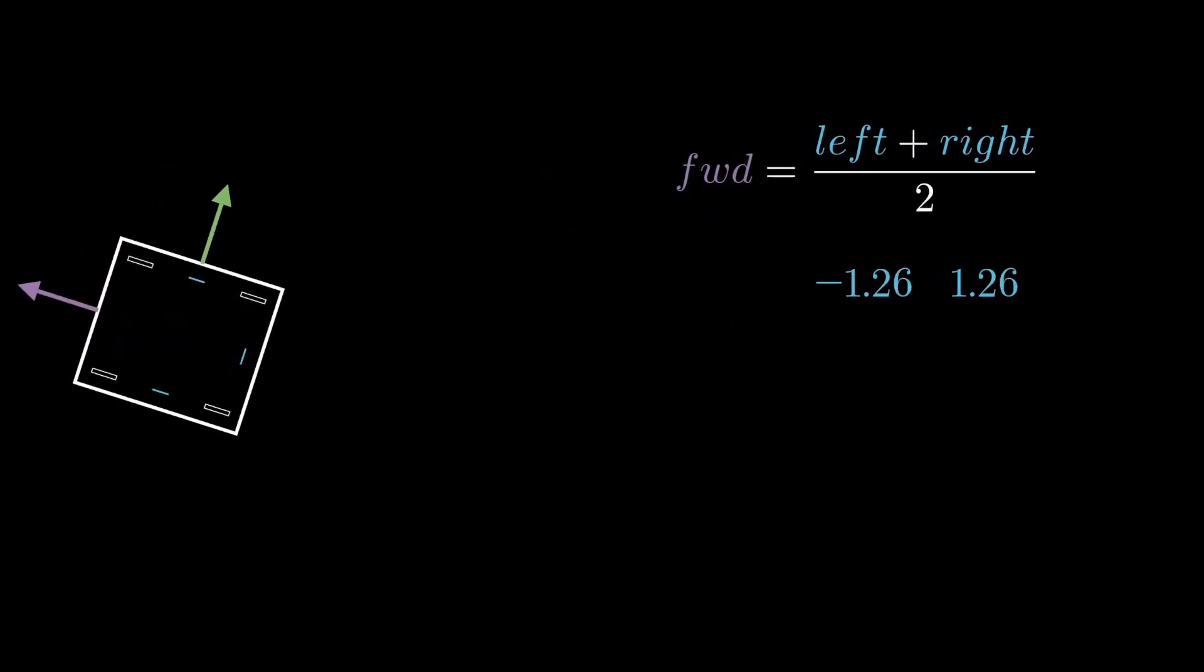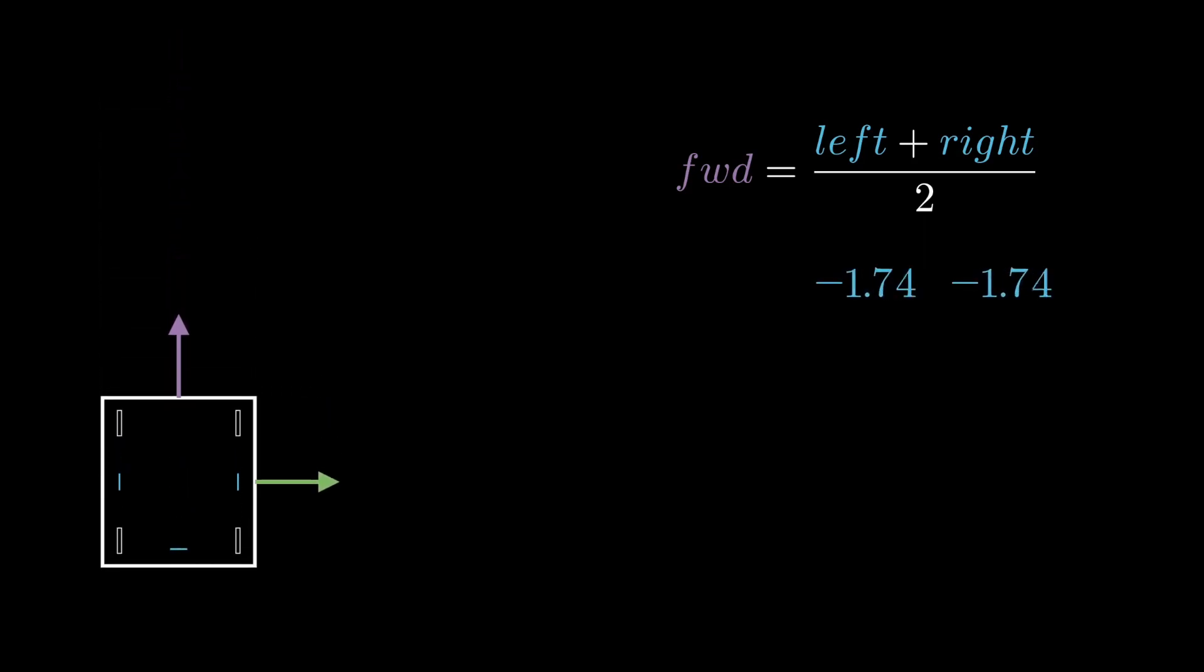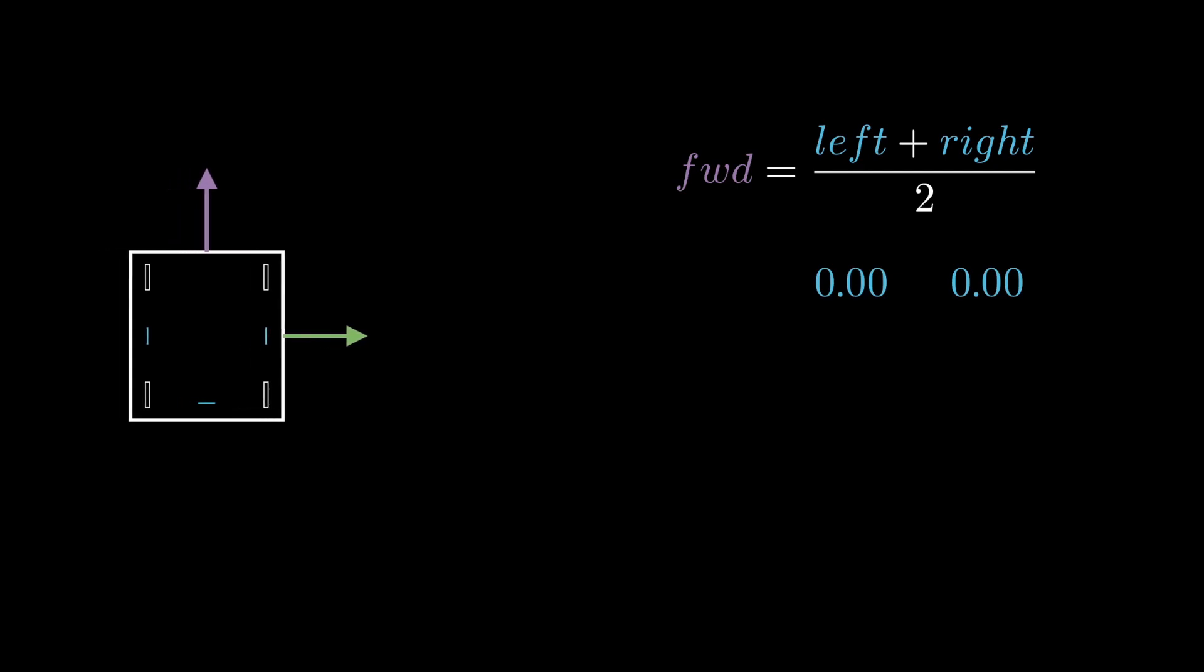This works because when rotating, the motion of one wheel is cancelled out by the reverse motion of the other, meaning there's no net change. But when moving forward, they compound. Additionally, the left and right wheels don't rotate in the robot's strafe direction, so it will naturally be independent of this motion.